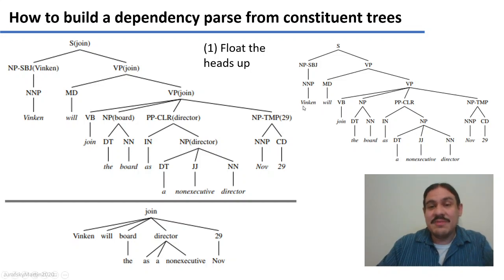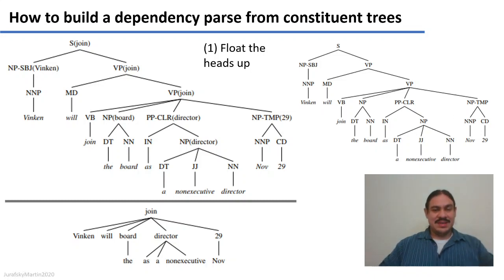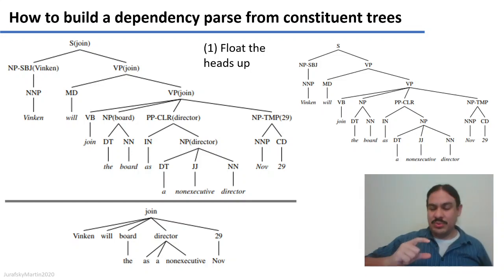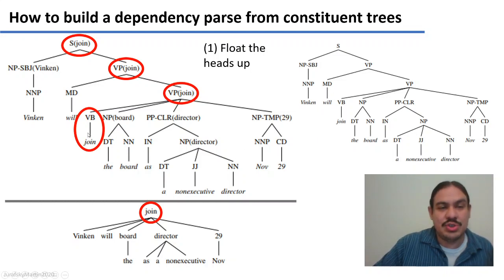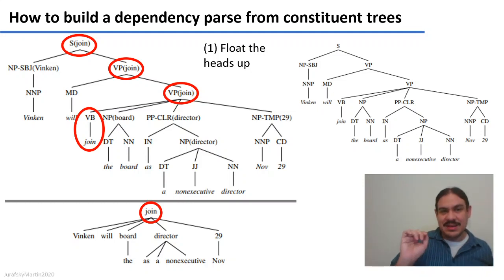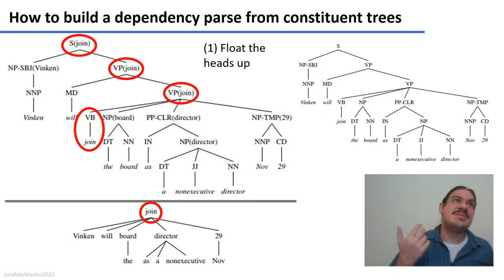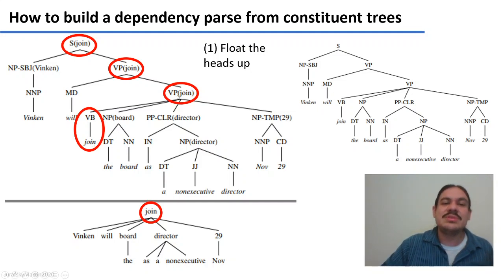We have the example: 'Vinken will join the board as a non-executive director November 29th'. The first thing we need to do is take the heads of each constituent and float them up to their dominating phrase. For example, we have the verbal phrase 'join the board as a non-executive director November 29th'. The head of this verb phrase is 'join' because this phrase is about joining something, so we float the word 'join' up to the verb phrase.